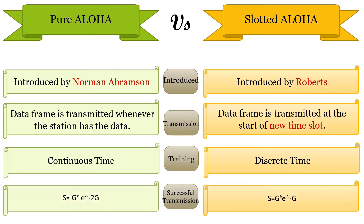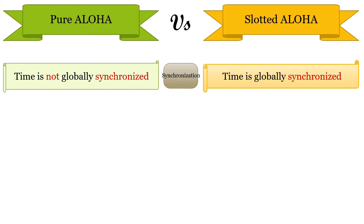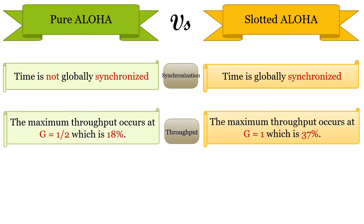These are the formulas to calculate throughput of pure Aloha and slotted Aloha respectively, where S is throughput and G is the number of transmissions made on the channel per unit of time. The time of sender and receiver in pure Aloha is not globally synchronized, whereas in slotted Aloha it is globally synchronized. The maximum throughput in pure Aloha occurs when G equals 1/2, whereas maximum throughput in slotted Aloha occurs when G equals 1.